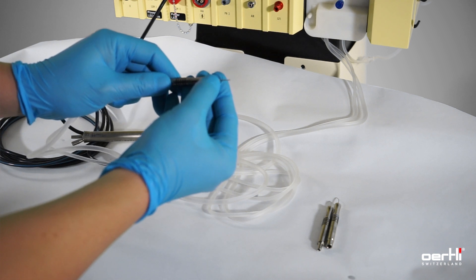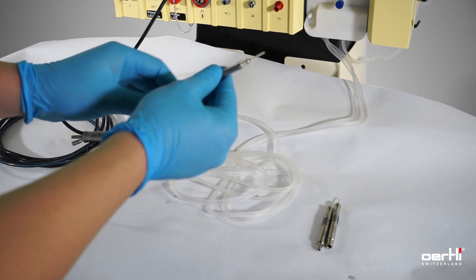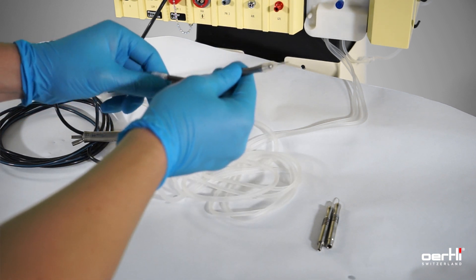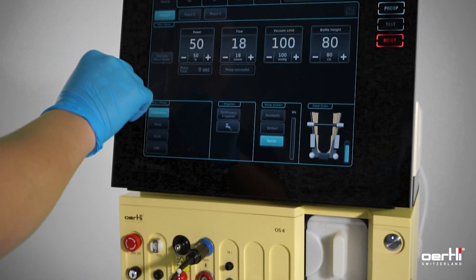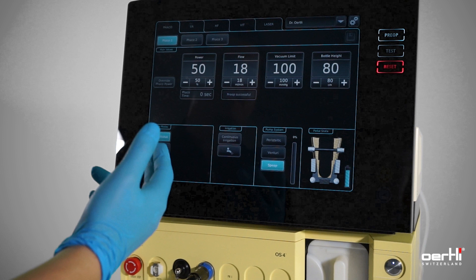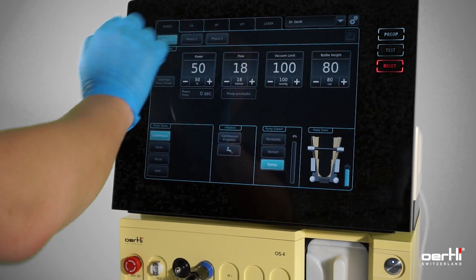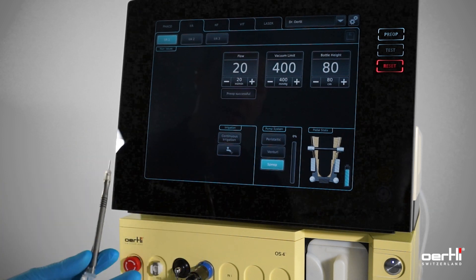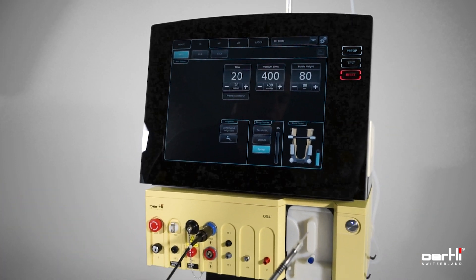Final step, attach the sleeve and then switch to IA function on the device. For visual reasons, we now remove the sterile back, press IA, hand over the IA handpiece to the surgeon and continue with the surgery.